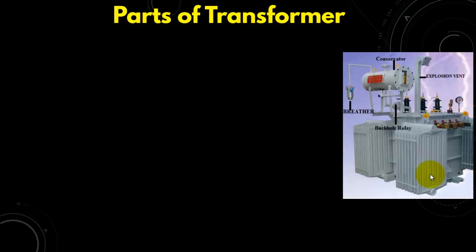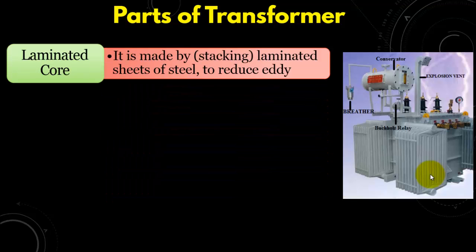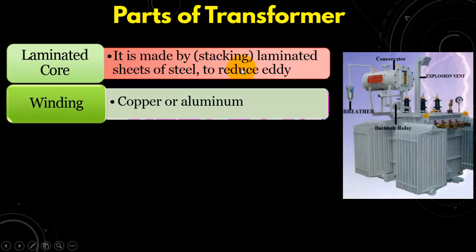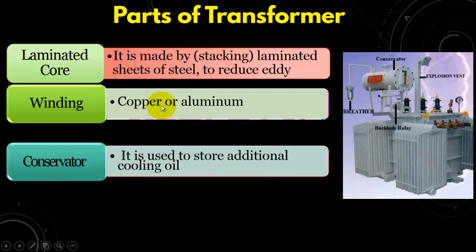Now we will talk about the parts of transformers. First of all, we have the laminated core which is made up of sheets of steels stacking together to reduce eddy current and hysteresis losses. The second major part of the transformer is obviously the winding which is made up of copper or aluminum material.